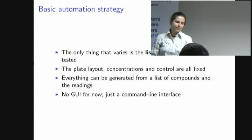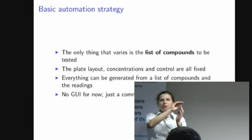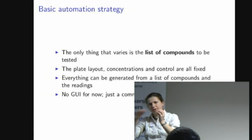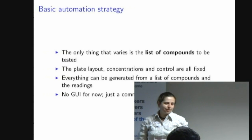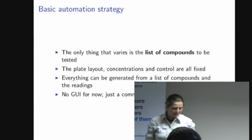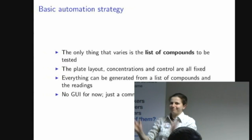We can do better than this with a script. The first thing I realized is that the only thing that varies in the metadata is the list of compounds to be tested, because everything else is completely standard. The researcher always uses a standard format for the wells — compounds going across in different concentrations with a control at the bottom and concentration controls on the sides, always the same control substance and concentration. So using just a list of compounds, we can generate all of the metadata, match it up with the readings, and it'll just work.